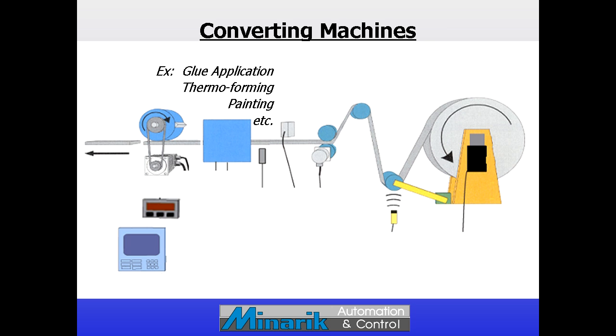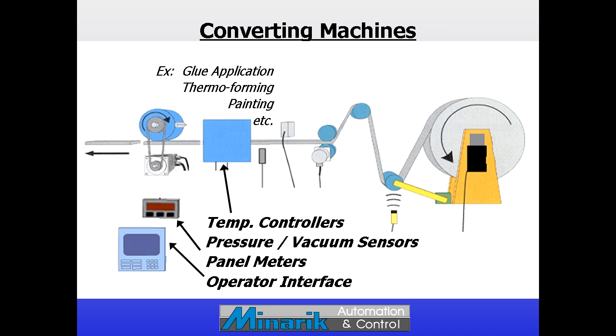Examples of intermediate processes are thermoforming, gluing, painting, printing, and things that can use temperature controllers, pressure sensors, panel meters, and operator interfaces.